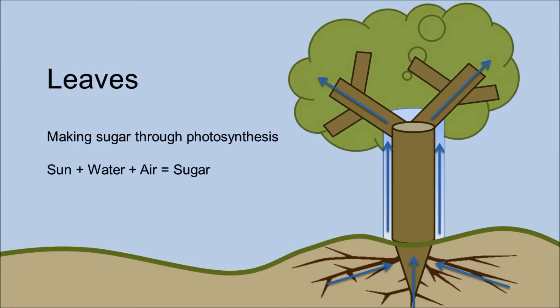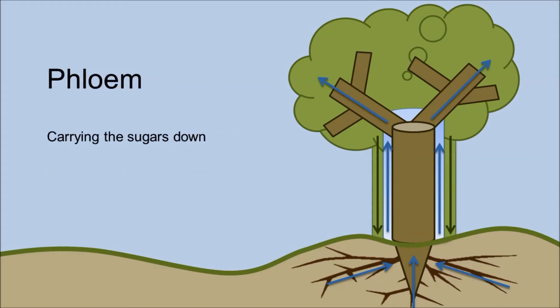The leaves make sugar through photosynthesis. They take energy from the sun and use it to combine water and air to make sugar. The phloem carries the sugars down to the rest of the tree.